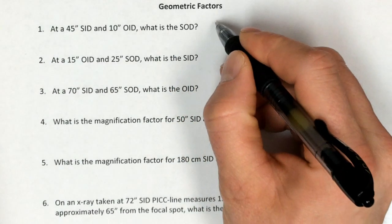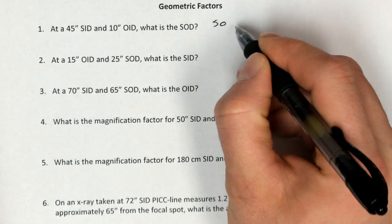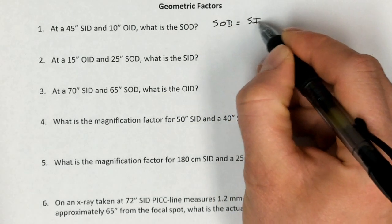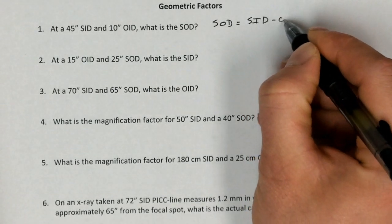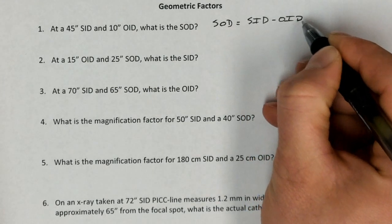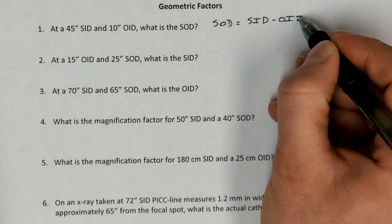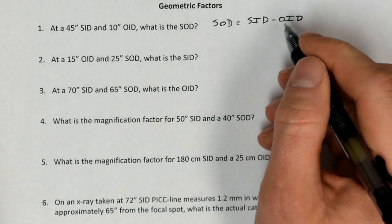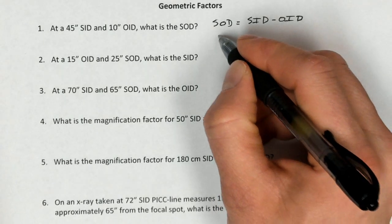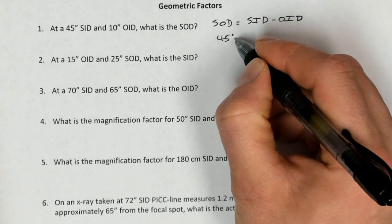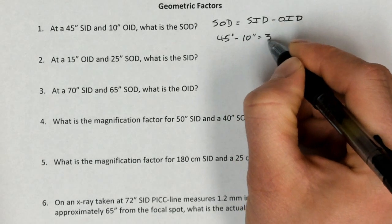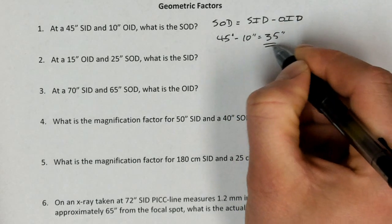To solve for SOD, this is going to be equivalent to taking the SID and just subtracting out the object to image distance. So that source to object distance is the SID minus the object to image distance. In this case, we would just say 45 inches minus 10 inches equals 35 inches. That's the final answer.